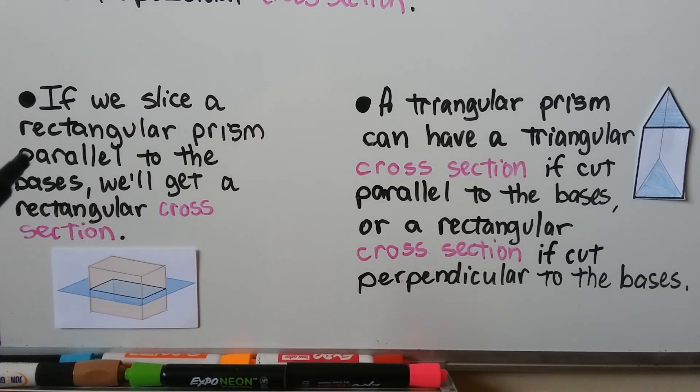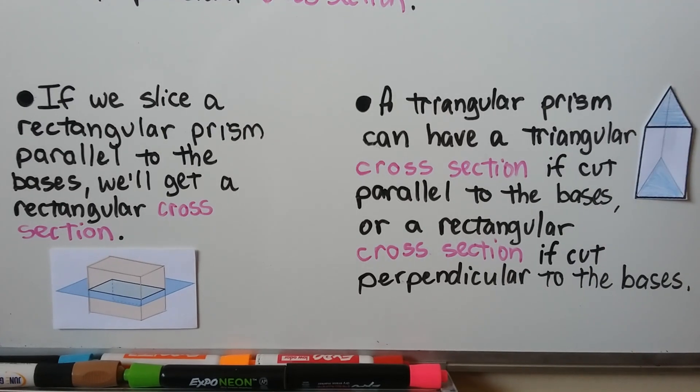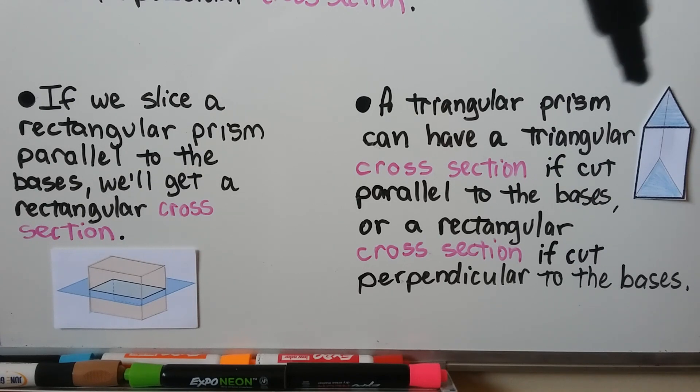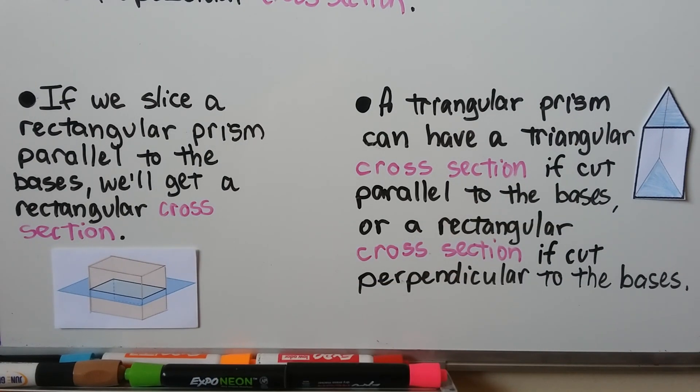If we slice a rectangular prism parallel to the bases, we'll get a rectangular cross section. A triangular prism can have a triangular cross section if cut parallel to the base, or a rectangular cross section if cut perpendicular to the bases.